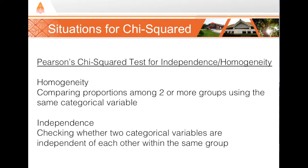On the other hand, when testing for independence, we're looking at whether two categorical variables are independent of each other within the same population. For example, looking at all Northeast Thai people as my population, I might ask what political party they belong to — red shirt or yellow shirt — and also ask their income level, classifying them into one of five income quintiles. Then I would check whether political affiliation is independent from socioeconomic level.